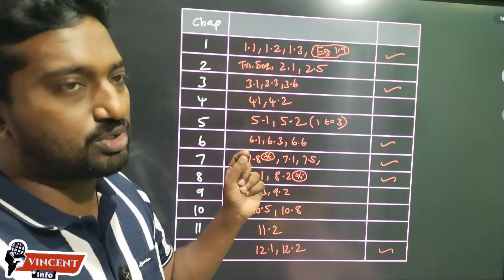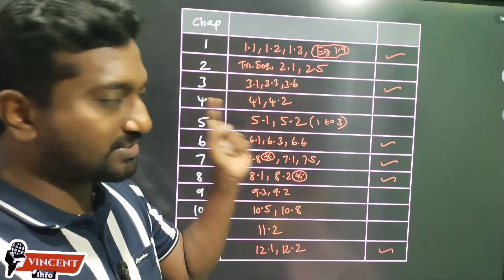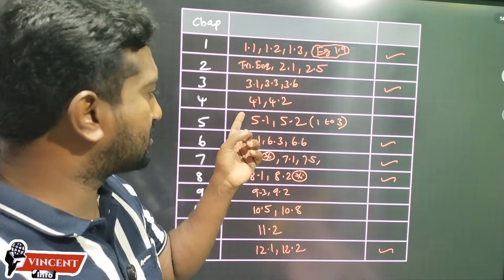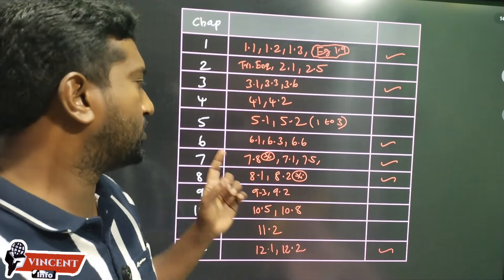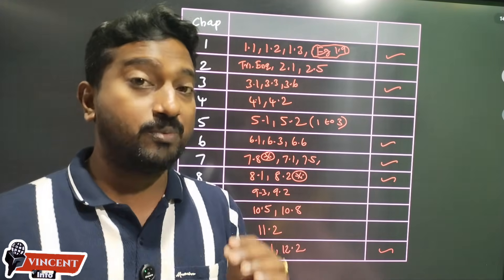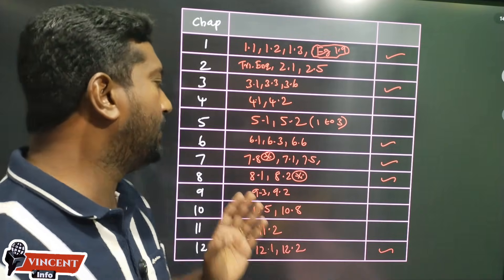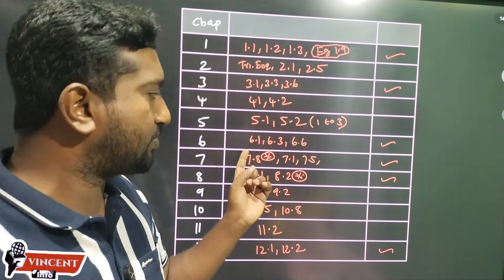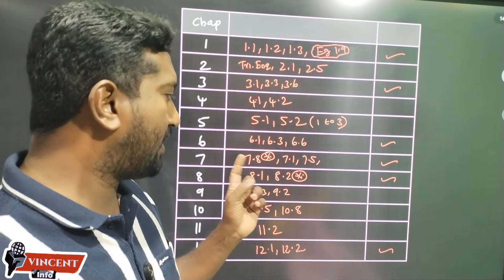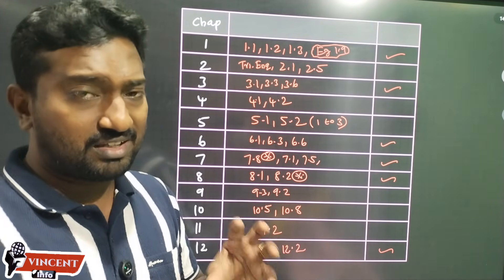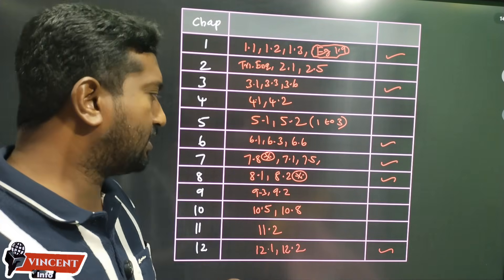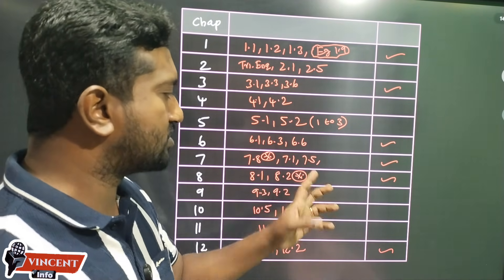In the third chapter, we have the first exercise, third exercise, and sixth exercise. In the fourth chapter, we have 4.1 and 4.2. In the fifth chapter, we have 5.1. In the fifth exercise, we have 3.2. In the sixth chapter, we have 6.1, 6.3, 6.6. In the seventh chapter, we have 7.1 and 7.5.